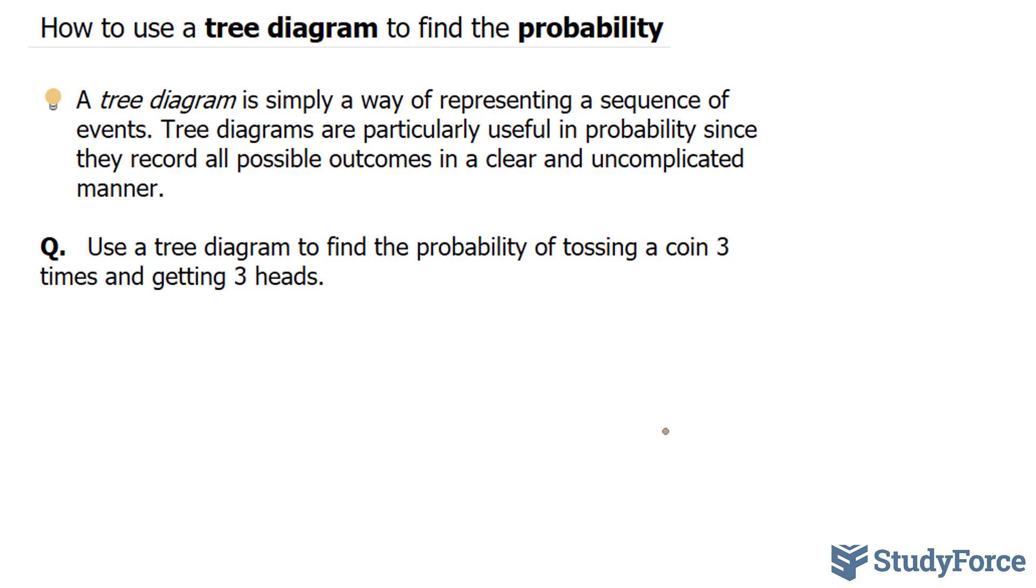The question we have is: use a tree diagram to find the probability of tossing a coin three times and getting three heads. So a coin has two sides, obviously.